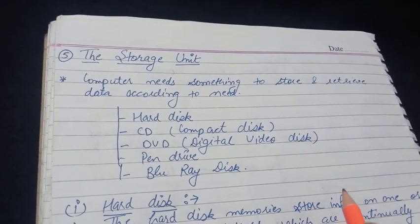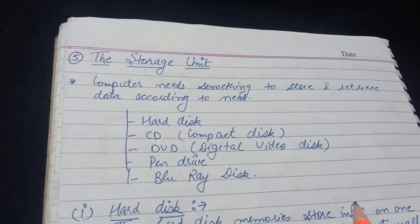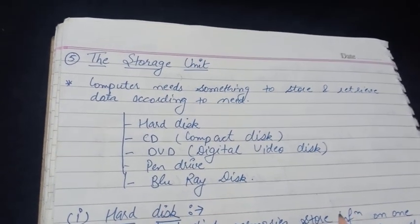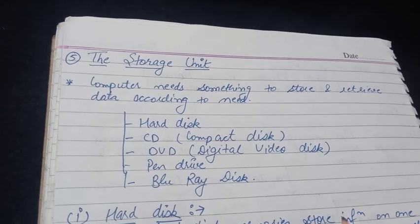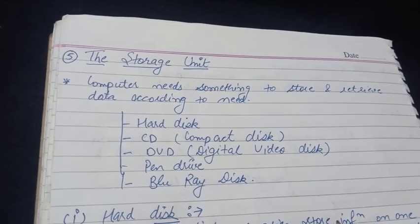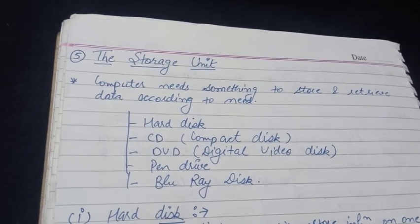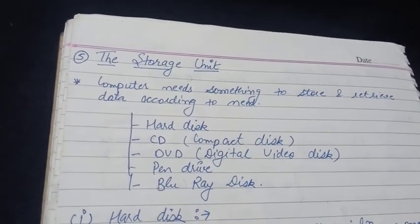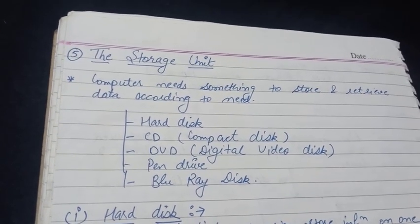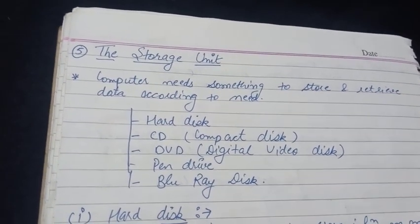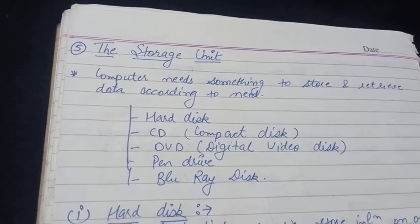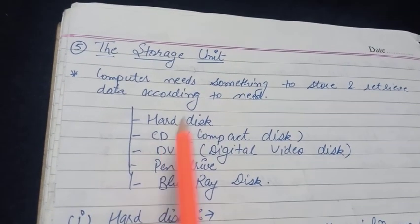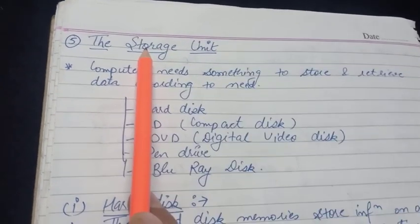By now we have studied about the main memory in which data was being stored temporarily and that could be used only when your system is on. Thinking apart from this concept, in a computer we need our data to be stored permanently so that we can use that data according to our choice in future whenever we need. For that particular purpose we have our next topic, that is the storage unit.